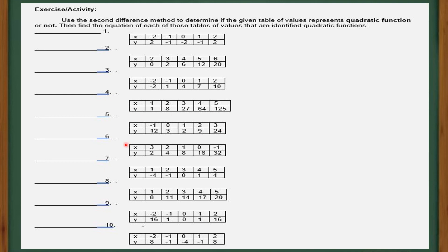For your activity, choose one number to answer. Use the second differences method to determine if the table of values represents a quadratic function or not, then find the equation for those that are quadratic. Send your answer to your class GC. Your section will get 10 points if everyone answers a different number. If any number is left unanswered, your highest score will be reduced accordingly. Thank you for listening — goodbye, everyone, and good luck with your assignment!